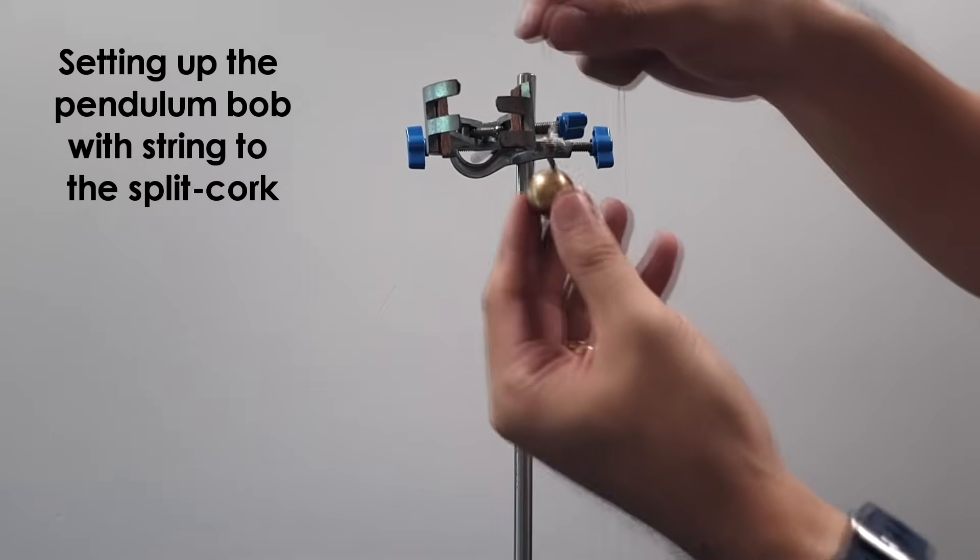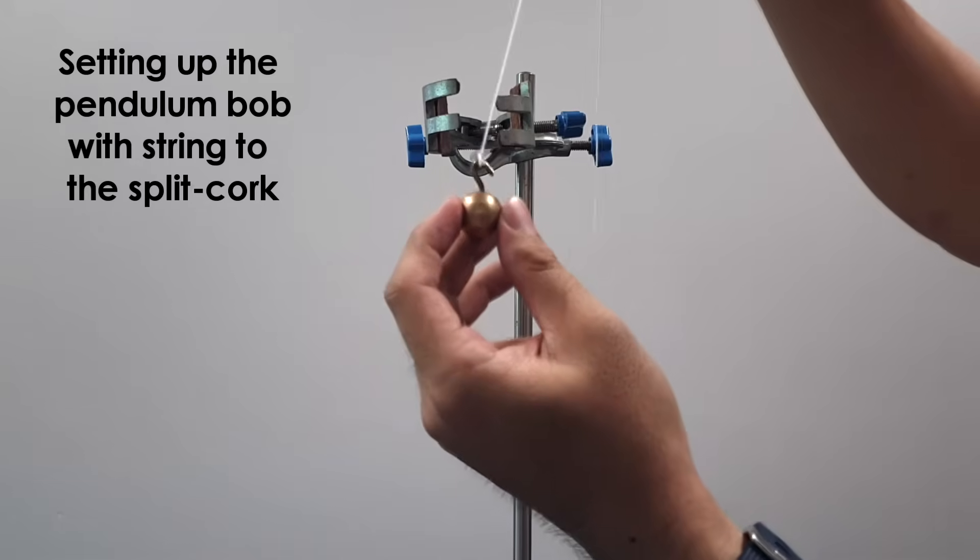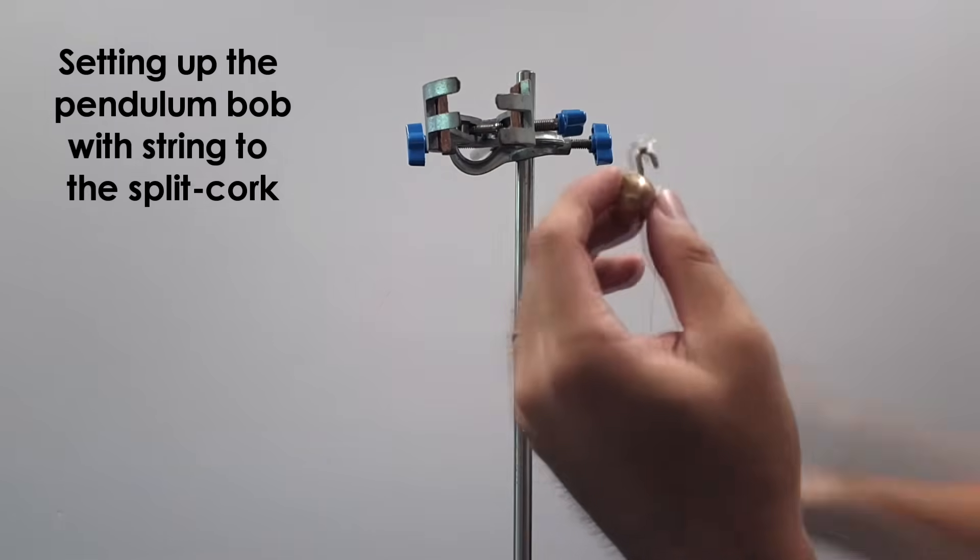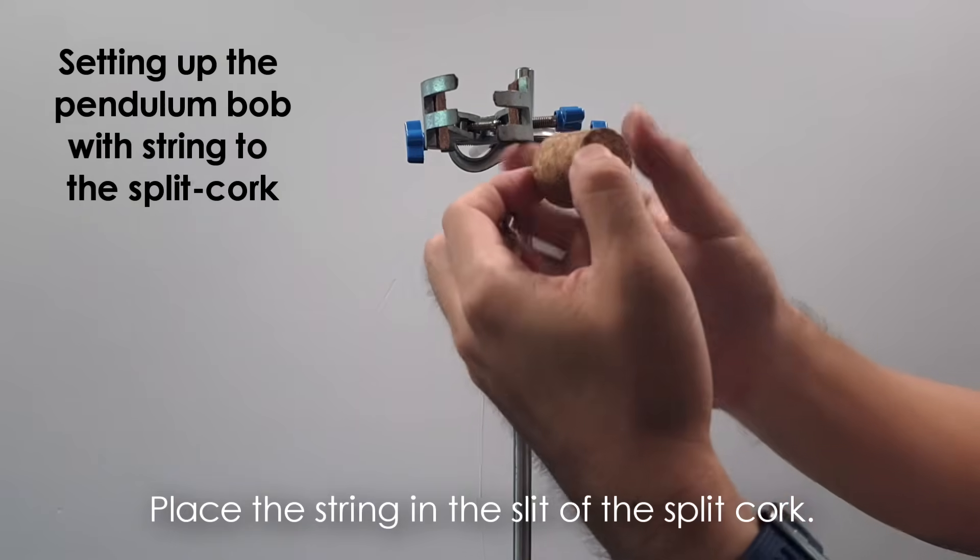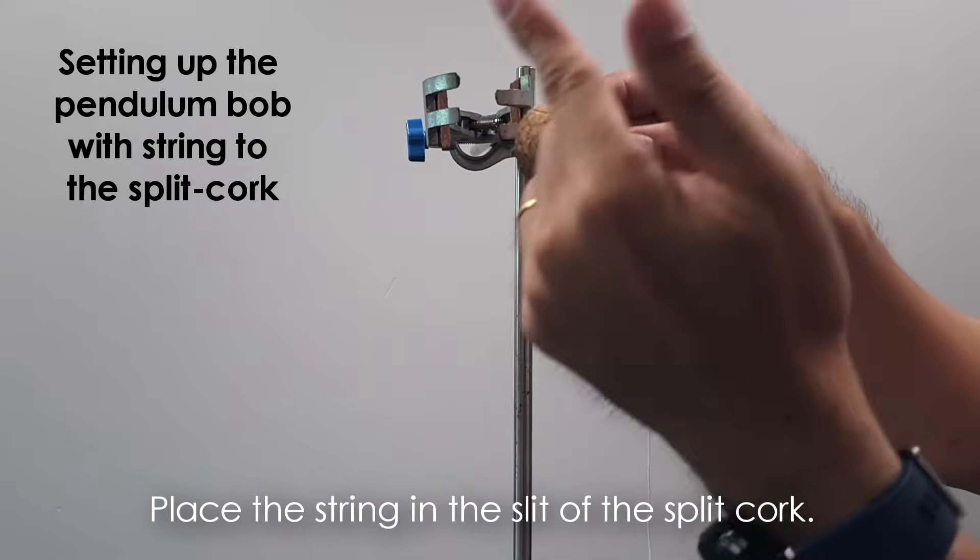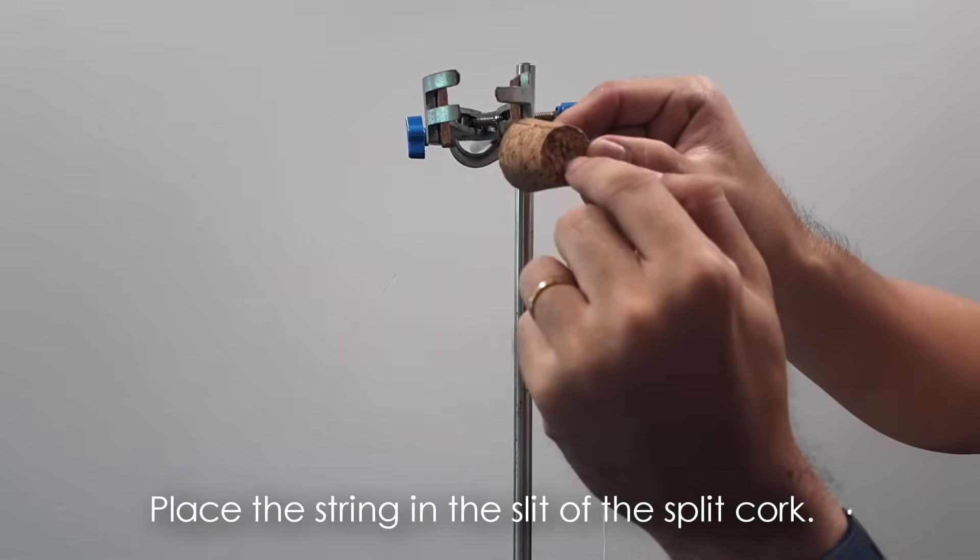Over here you have a pendulum bob that's attached to a string which is about 120 cm. Next you have a split cork here. It comes in two halves, but for this case they just make a cut, a slit all the way to the center of the cork.